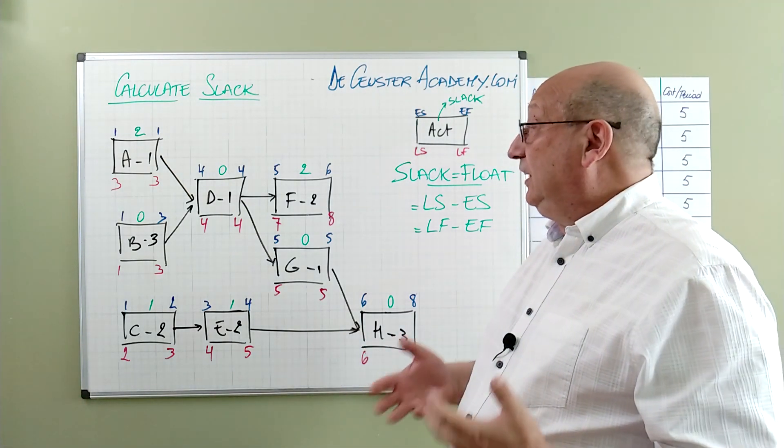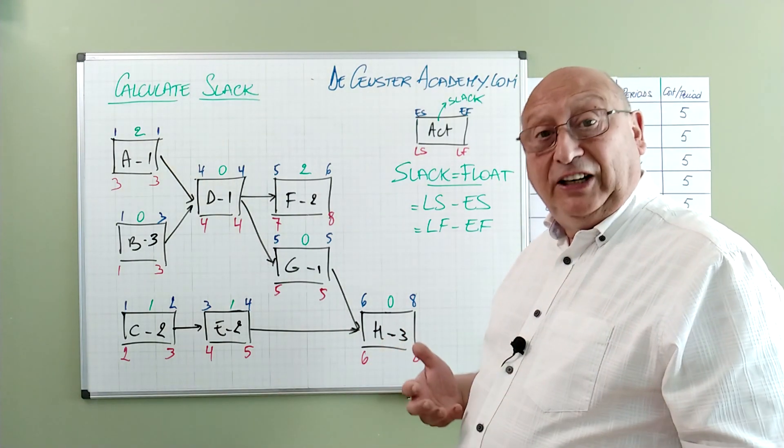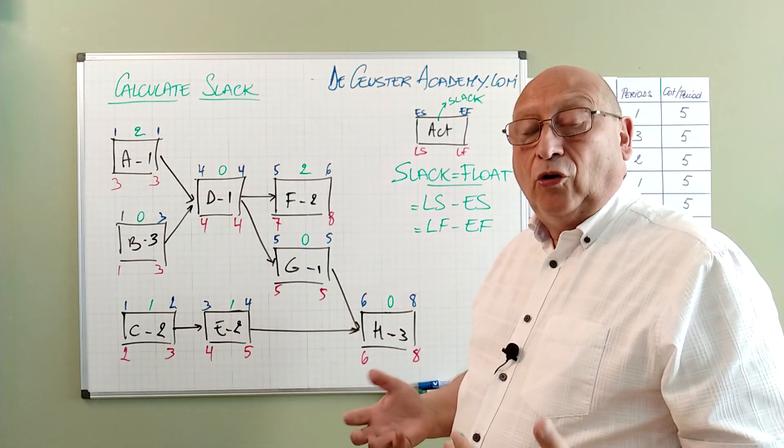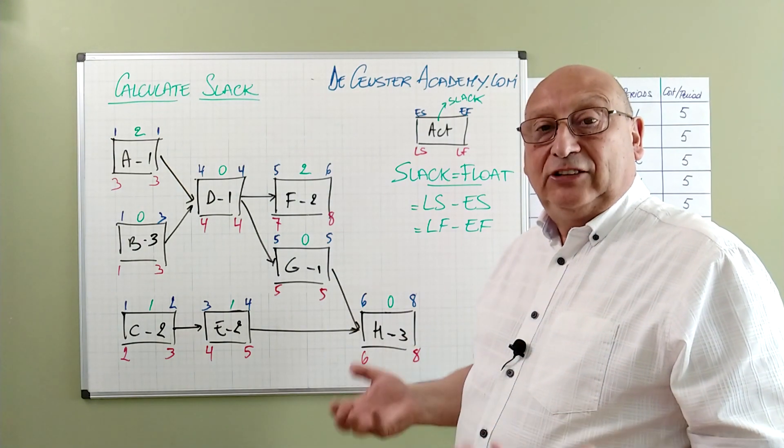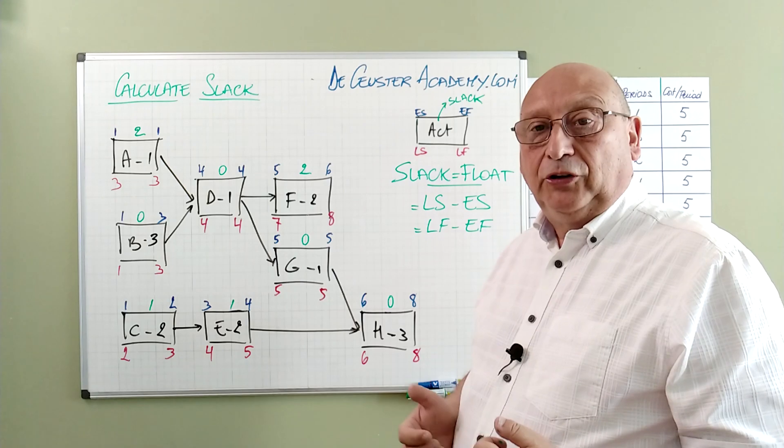Or our activity can start on period three and finish on period three. Those are in fact the results or the consequences when we have an activity that's not on the critical path. And we will use that later in some other calculations.